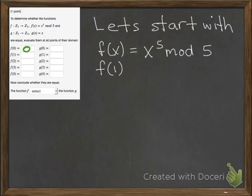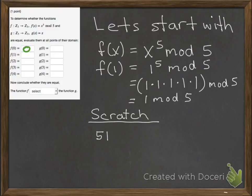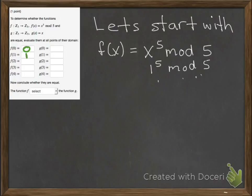We evaluate f at 1: 1 to the fifth mod 5 is 1 × 1 × 1 × 1 × 1 mod 5, which equals 1 mod 5. Our scratch work: 5 goes into 1 zero times; 0 times 5 is 0; 1 subtract 0 is 1. Our remainder is 1. We write that in.